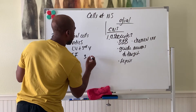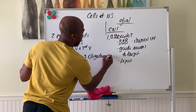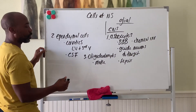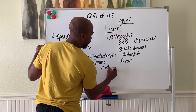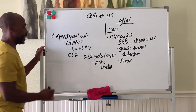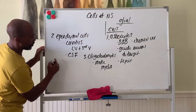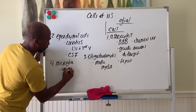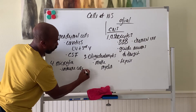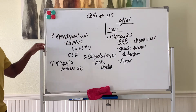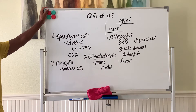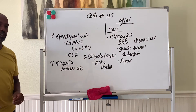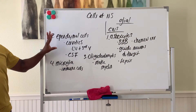Third, you have oligodendrocytes, which make a fatty material called myelin that covers axons. Fourth are microglia — these are immune cells that fight off brain infections such as encephalitis and meningitis. Microglia are the go-to cells that get involved in trying to fight off those infections. Those are the four types of glial cells found in the CNS.